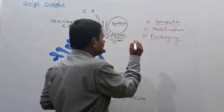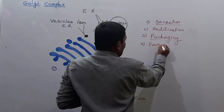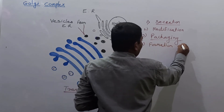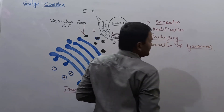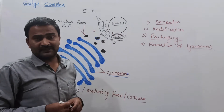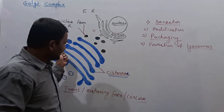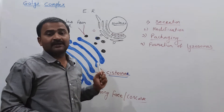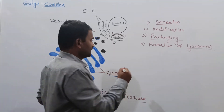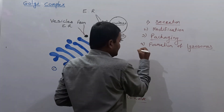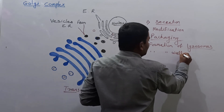Another function of the Golgi complex is the formation of lysosomes, which are the next component of the endomembrane system. Primary lysosomes are formed from the Golgi complex. The Golgi complex is also involved in the formation of cell wall materials.